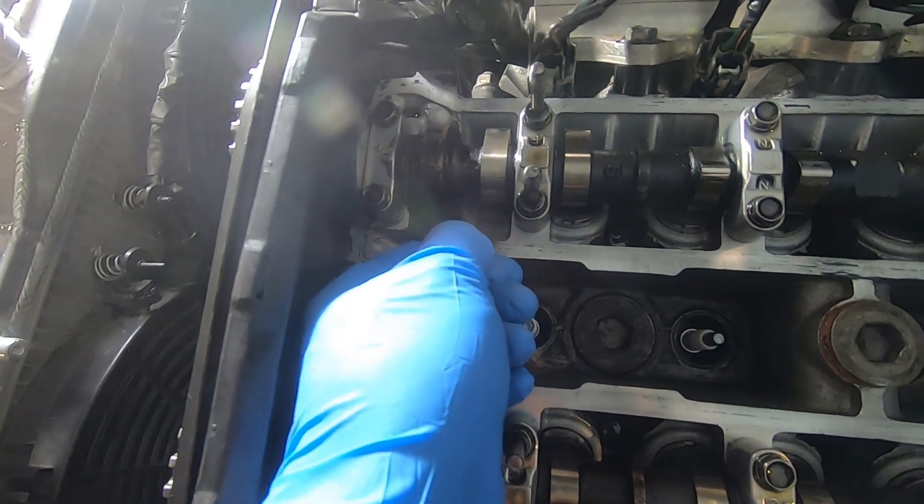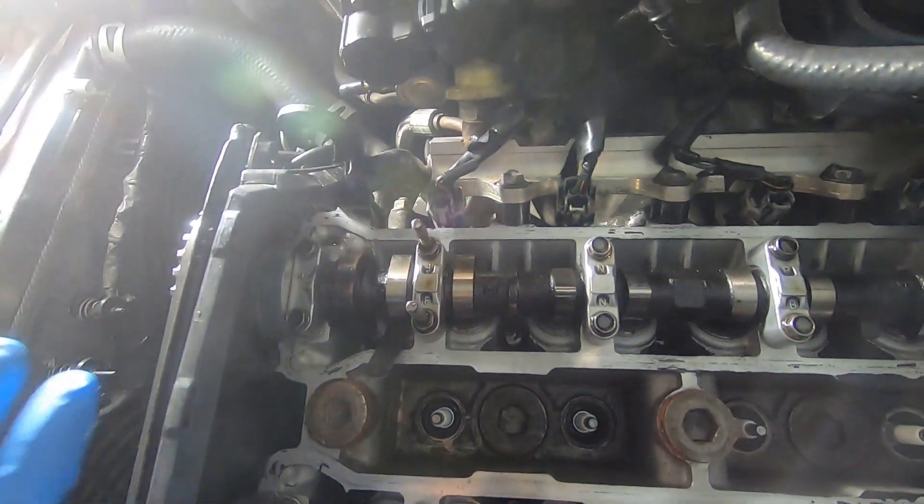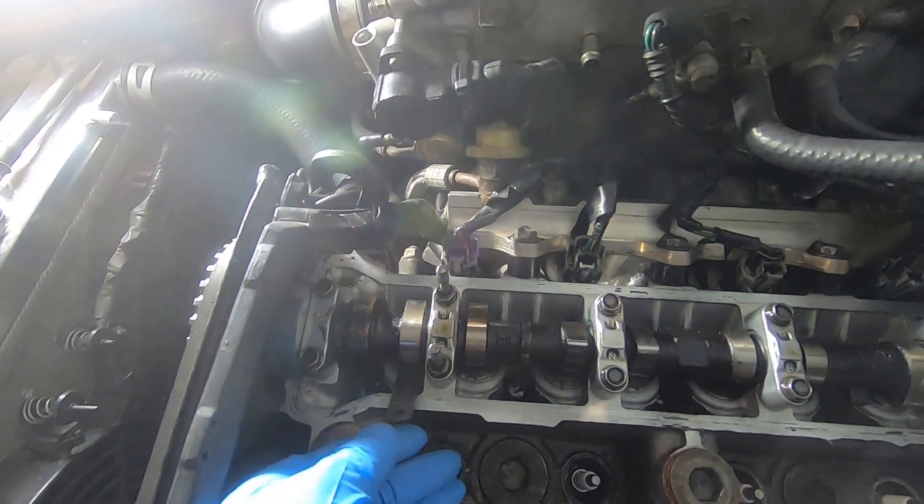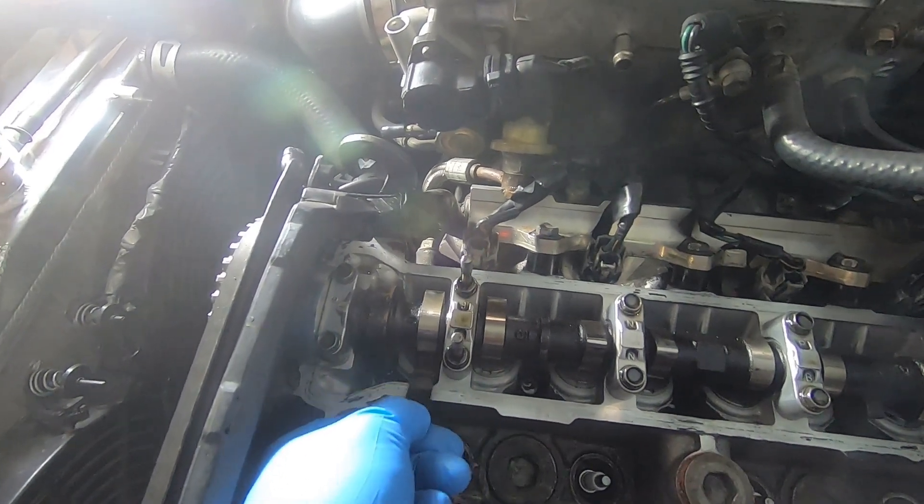You can see this thing's still really loose. When you use feeler gauges, they usually say it's the feeling of a hot knife through butter. But if I can put the over-the-side spec feeler gauge in here, for sure it's too loose.